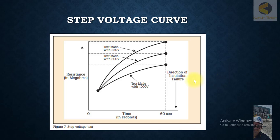Let us discuss how to analyze the curve for step voltage. Here you can see this is the step voltage curve, with a time of 50 seconds. We applied 250 volts and get this many mega ohms; at 500 volts we get this many mega ohms; and at 1 kV we get this many mega ohms.